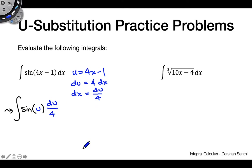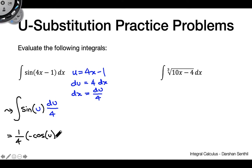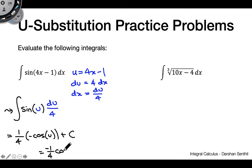That is a much nicer integral. The antiderivative of sine is negative cosine, so pulling the one-fourth out front, we get one-fourth times negative cosine of u plus c. The last step is to plug back in for u, giving us our final answer: negative one-fourth cosine of (4x minus 1) plus c.